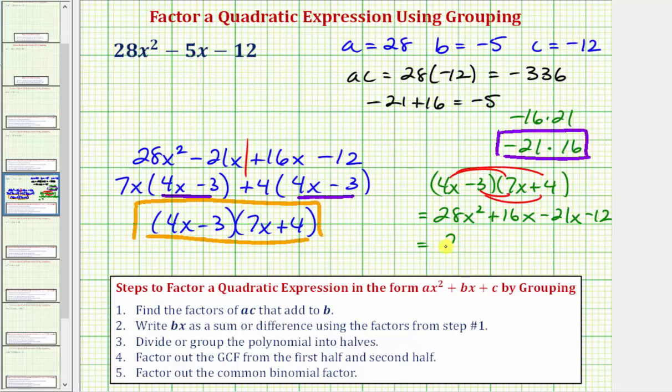Combining like terms, we have 28 x squared, and 16 x minus 21 x is negative five x, or minus five x, and minus 12. And notice how this is the same as the given expression, which means this is factored correctly. I hope you found this helpful.